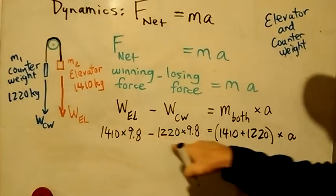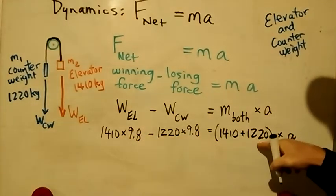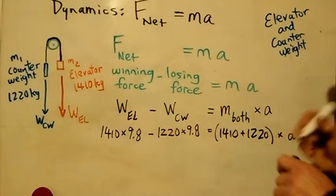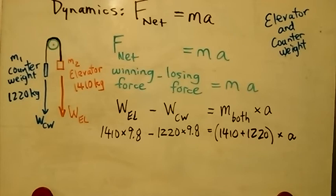You can see we've got a number, a number, a number, and then a variable. So we've got one equation, one unknown, and we can find out what a is.